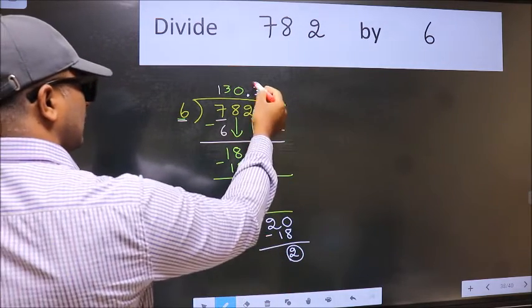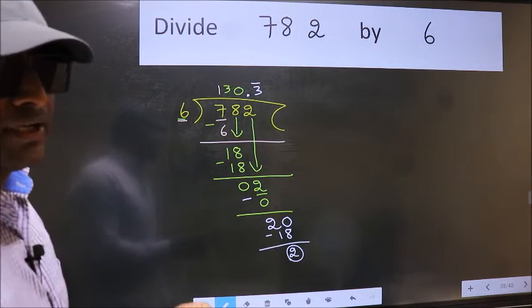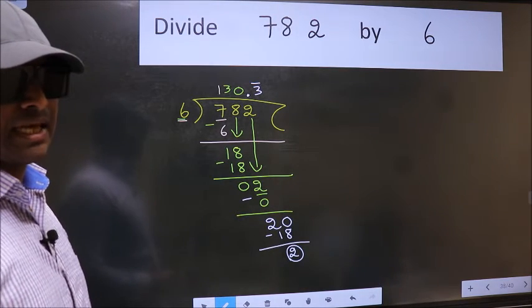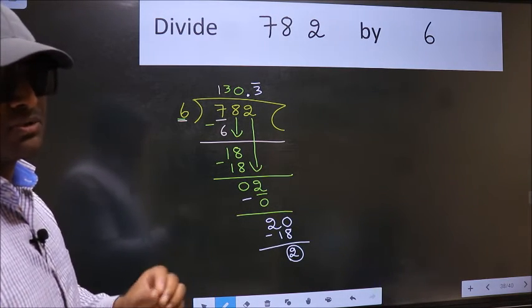We got 2 again. That means we get bar on this number. Did you understand where the mistake happens? You should not do that mistake.